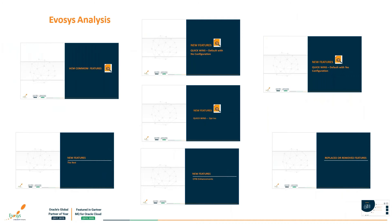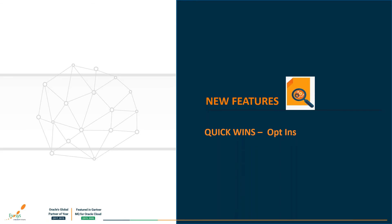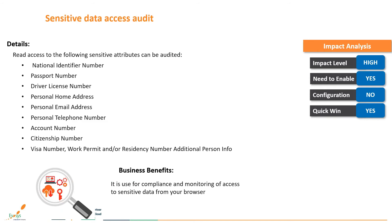Moving to the next section - quick wins and opt-ins. In any enterprise, audit plays a vital role and protecting sensitive data is a major goal. In this release, we have read-only access for sensitive attributes such as the person's account number, citizenship number, passport, national ID, home address, and so on - out of the box. This is very useful for compliance and monitoring business requirements and adds on to the audit policies of organizations.